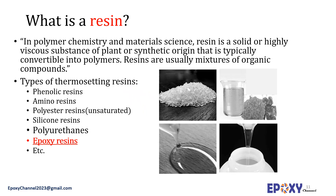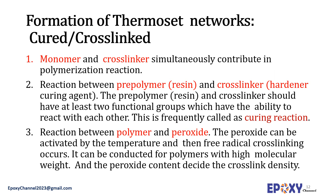If you are in the polymer industry, you might be familiar with the word 'resin.' In polymer chemistry and material science, resin is a solid or highly viscous substance of plant or synthetic origin that is typically convertible into polymers. Resins are usually mixtures of organic compounds. There are various types of thermosetting resins — for example, phenolic resins, amino resins, polyester resins, unsaturated polyesters, silicone resins, polyurethanes, and finally the most important class for us: epoxy resins.